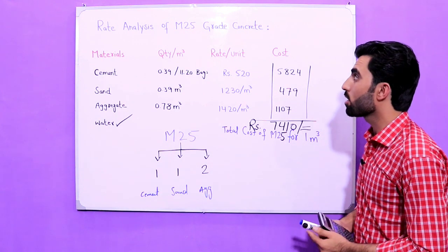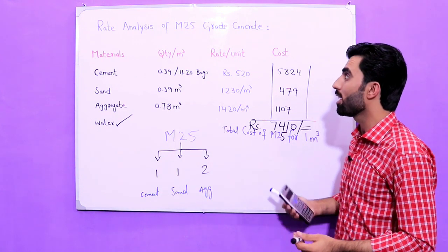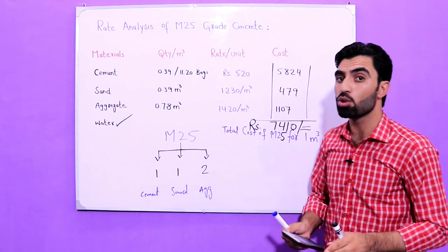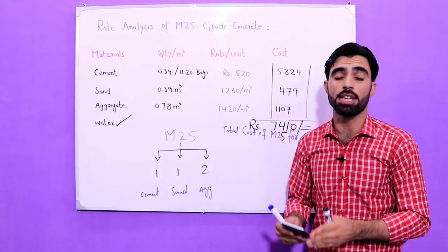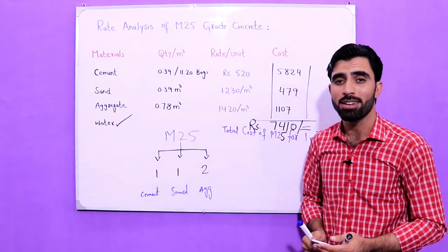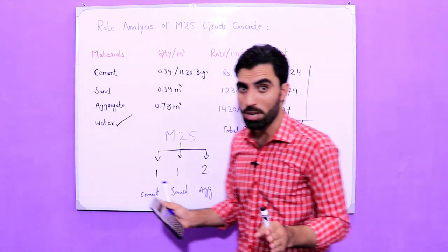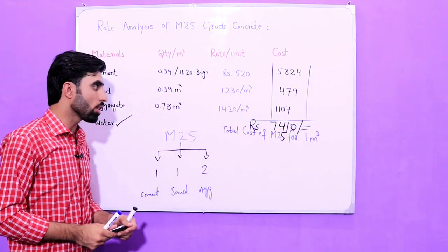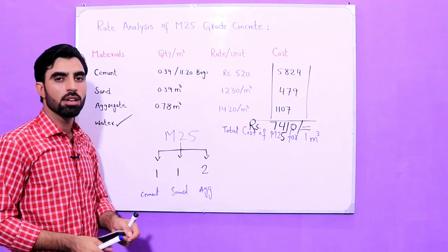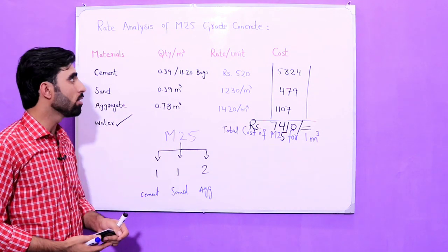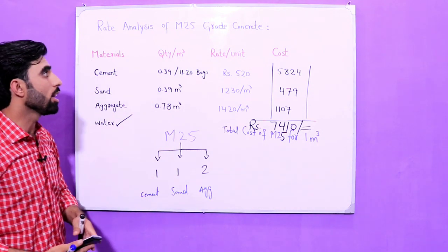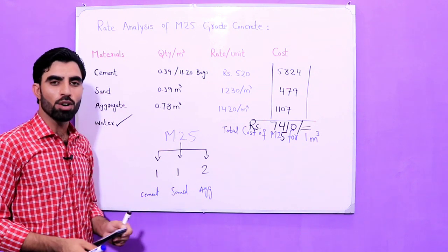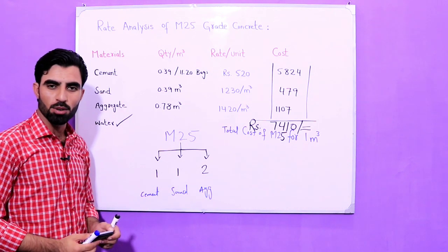This is the rate analysis for M25 grade concrete. With this same formula you are able to find the rate for M20, M15, M10, etc. If you have any question about this video, you can comment and I will try to reply. Thanks for watching, see you in my next video. Goodbye.